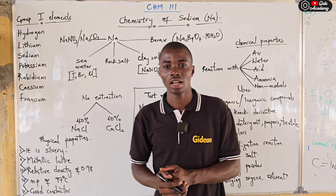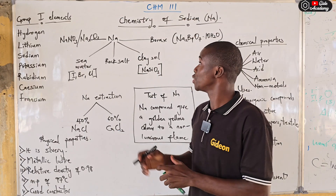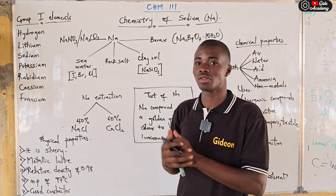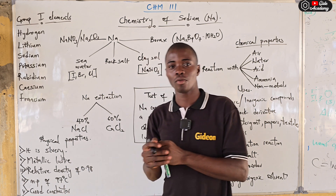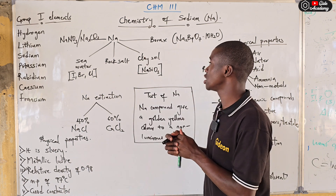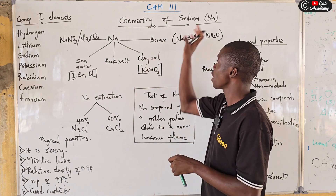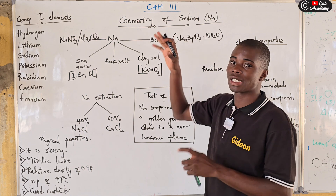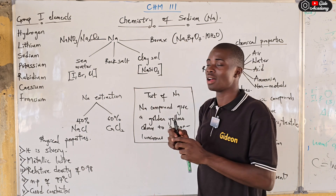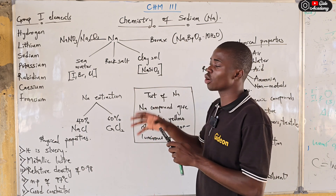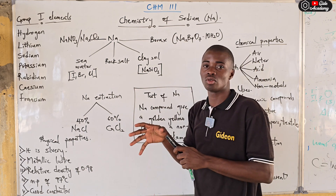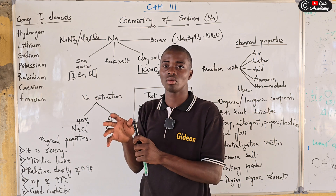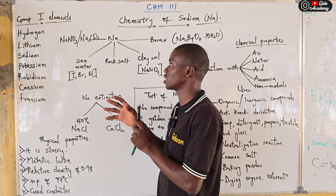Good day everyone and welcome to Episode 2 of Chemistry of Selected Metals and Non-Metals. For this second episode, I'll be working on the chemistry of selected metals, and we are going to pick one element from Group 1, one element from Group 2, one element from Group 3, and so on to the end of the periodic table.